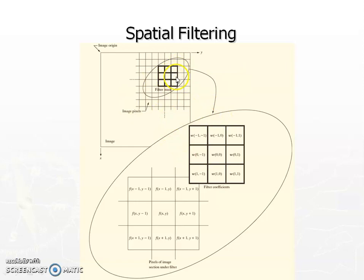For the next pixel, shift the mask, multiply, and add. Repeat: shift, multiply, add for each subsequent pixel. For the next row, shift the mask downwards and again multiply and add. This operation is nothing but convolution. So spatial filtering is nothing but convolving the image with a given impulse response.